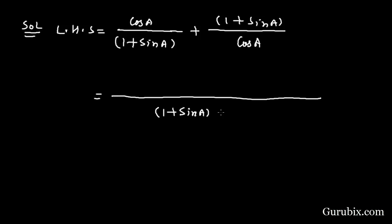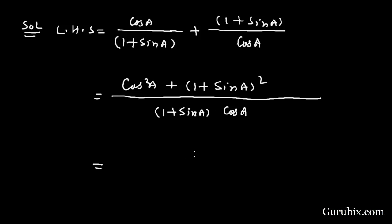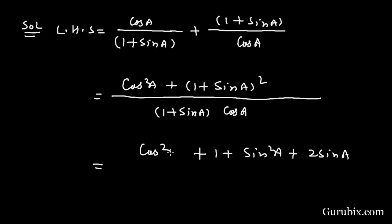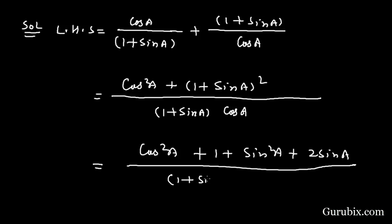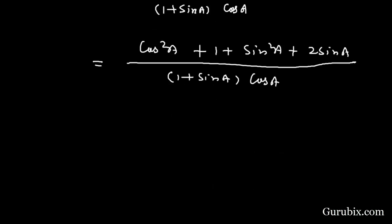The LCM is (1 + sin A) times cos A. The numerator becomes cos² A plus (1 + sin A)². If we expand (1 + sin A)², we get 1 + sin² A + 2 sin A. The denominator is (1 + sin A) times cos A.